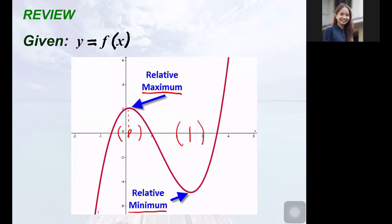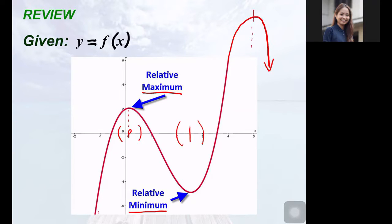In other words, you have a maximum or a minimum value relative to the interval. But if you are interested in the minimum or maximum values in the entire domain of the function, then that's absolute extremum. Note that relative extrema may not be unique. For example, if I extend the graph in this manner, another relative maximum value exists at the point here between four and five.